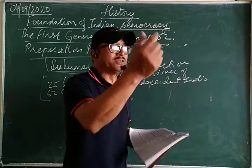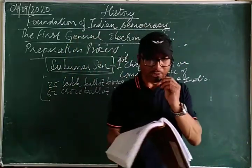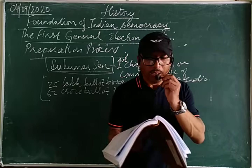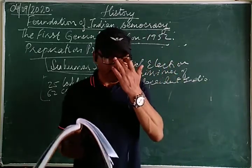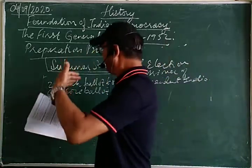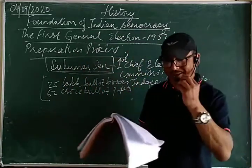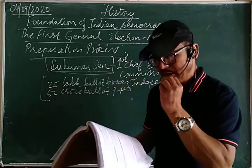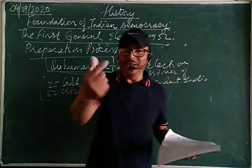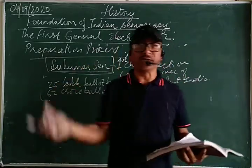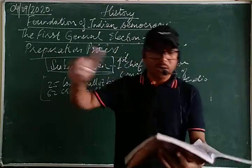In today's time we use EVMs — Electronic Voting Machines. But in those days, ballot boxes and ballot papers were used. A ballot box is the box where ballot papers are kept and later counted. A ballot paper is a sheet of paper with columns listing contestant number one, their symbol and name, contestant number two, their symbol and name, and so on. To cast a vote, you would use a stamp handle and stamp the symbol of your chosen candidate.